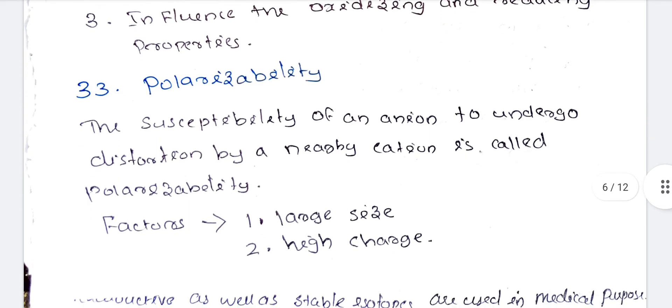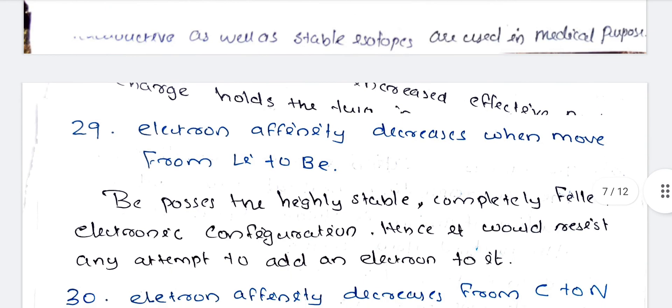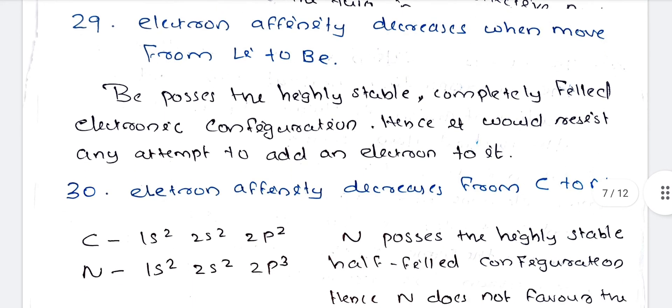Next one is polarizability. The susceptibility of an anion to undergo distortion by a nearby cation is called polarizability. The two factors are large size and high charge.